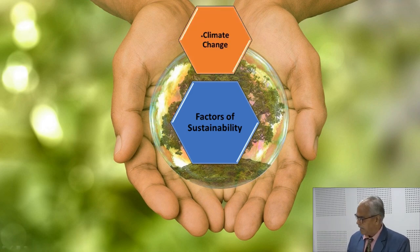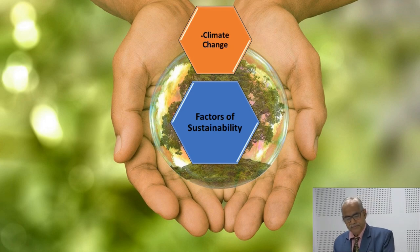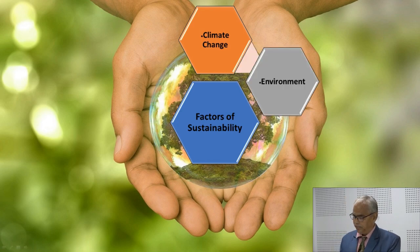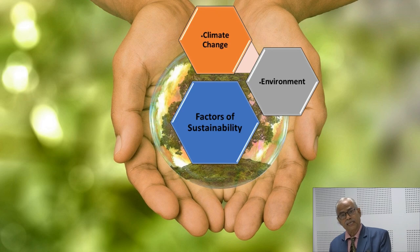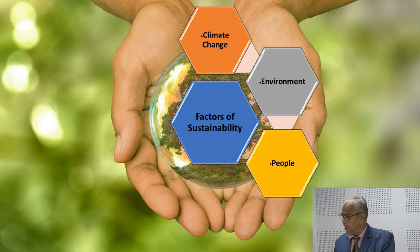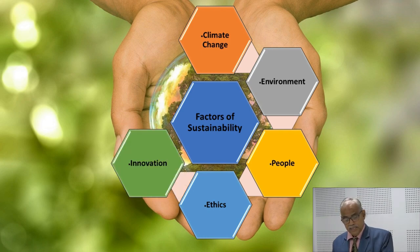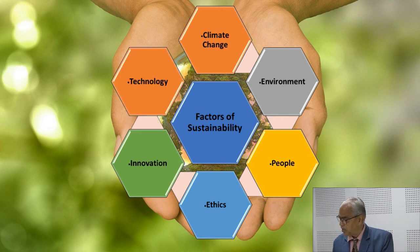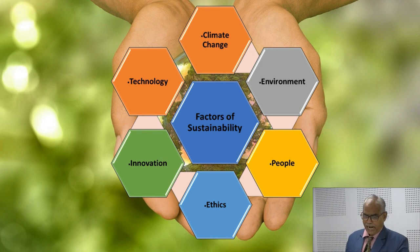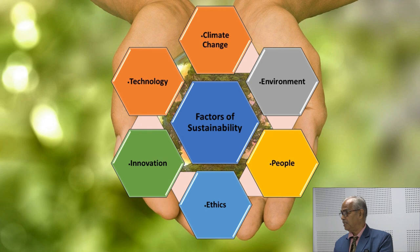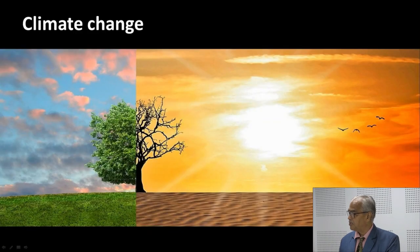There are different factors of sustainability: the first factor is climate change, the second is environment, the third is people, the fourth is ethics, the fifth is innovation, and the sixth is technology. We will understand what these factors are and how they are interlinked with each other, contributing to sustainability in our life with a futuristic orientation.